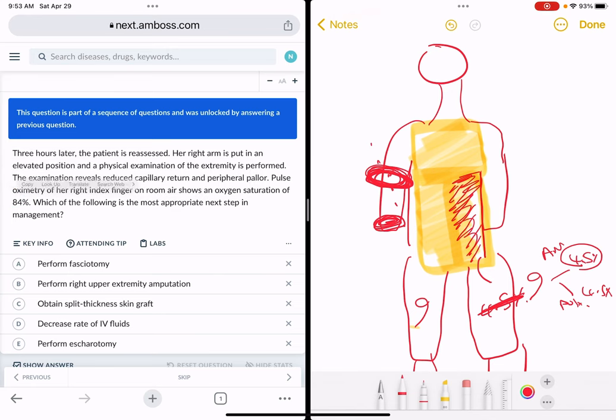Pulse oximetry of her right index finger on room air shows oxygen saturation of 84 percent. What's the next step right now? This is time to do escharotomy. Would it be escharotomy or fasciotomy? Are we just gonna cut the skin, the dead skin, or are we gonna cut the dead skin and the underlying fascia as well that's probably under compartment syndrome? Is it escharotomy or is it fasciotomy?